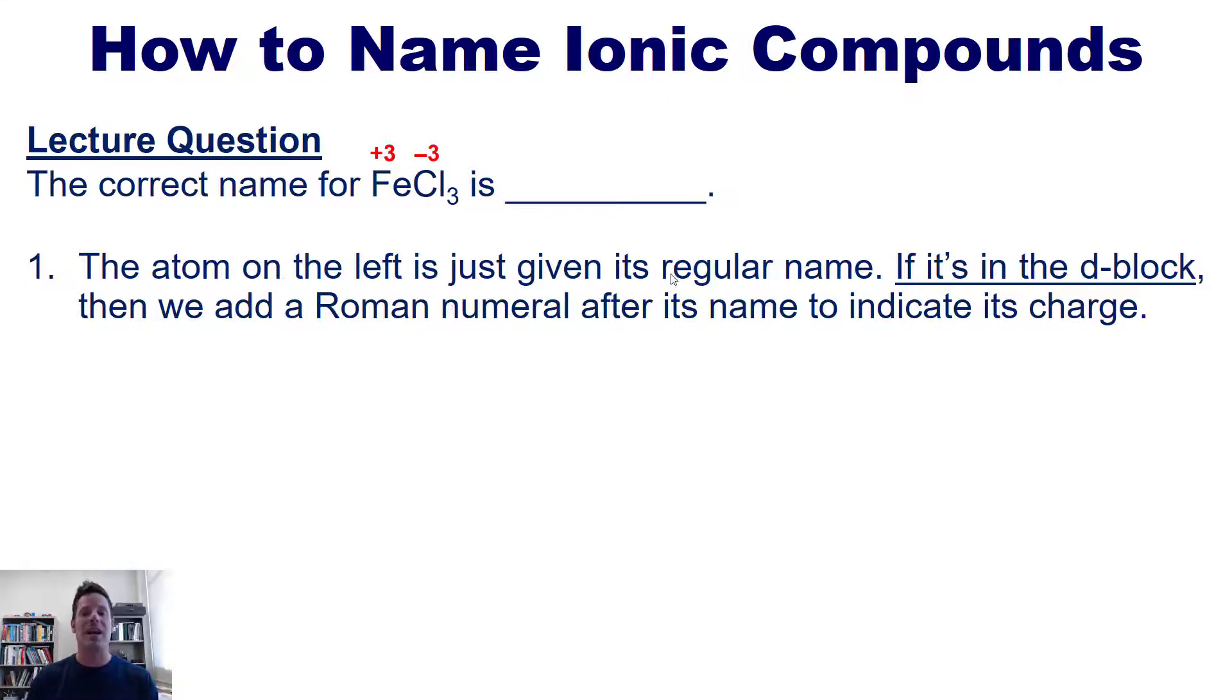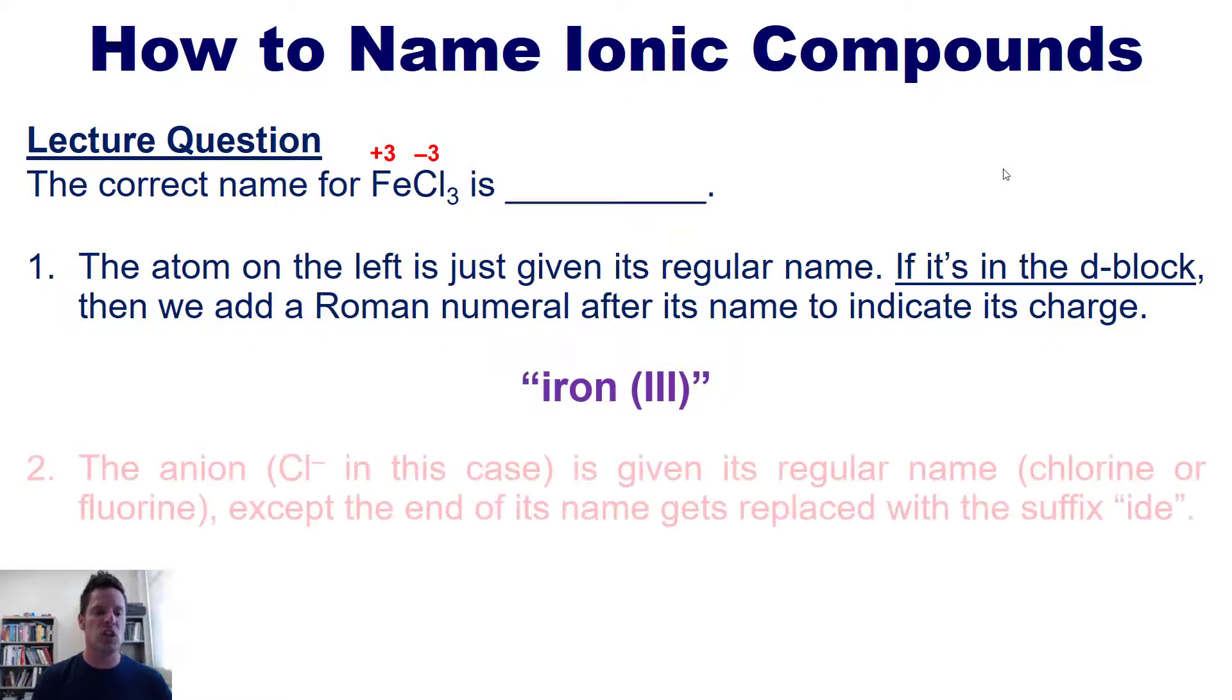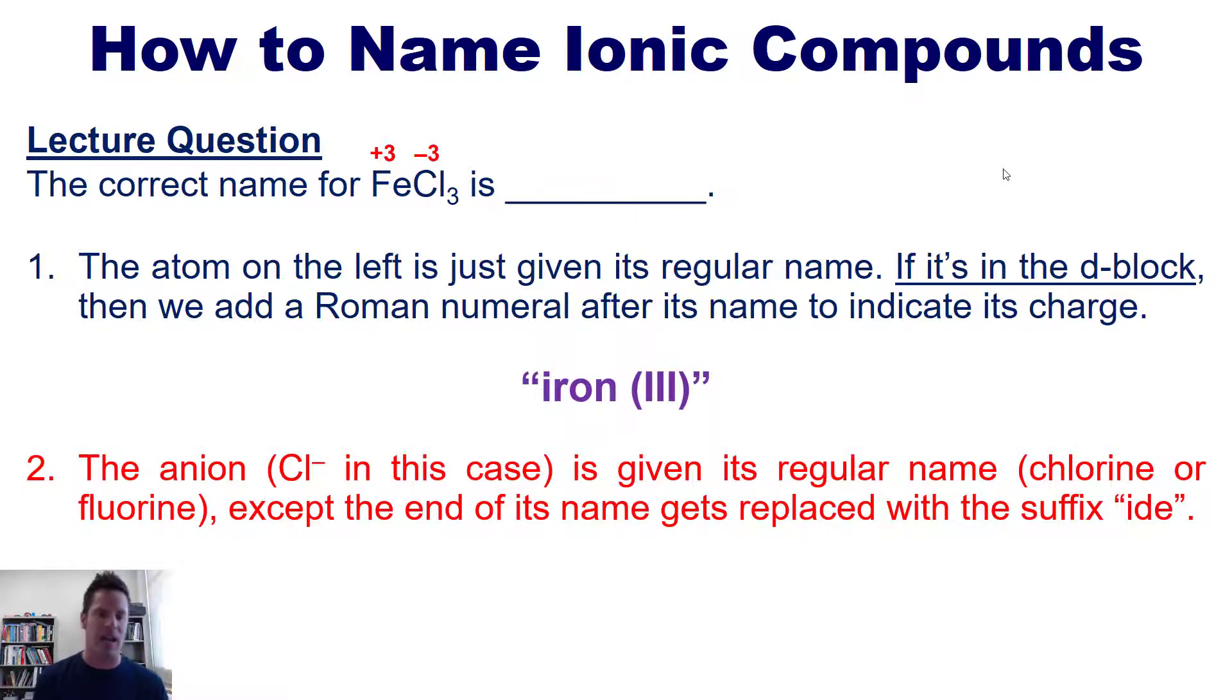With that information, we can now write down the first half of our name. It's going to be iron, and because the iron is in the D block on the periodic table, we have to add a roman numeral to the right of its name in order to indicate what charge it has. And this particular iron has a plus three charge. So the first half of our name is iron three. Make sense? Now onto rule number two. The anion is given its regular name, chlorine or fluorine, except that we add the suffix "-ide" at the end of it. In this case, then it's not going to be called chlorine, it's going to be called chloride. So the correct name for this ionic compound is iron three chloride.